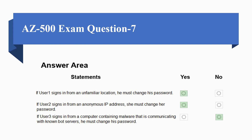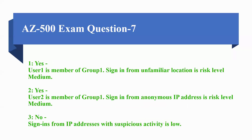If User 2 signs in from an anonymous IP address, must she change her password? Yes. If User 3 signs in from a computer containing malware that is communicating with a known bot server, must he change his password? No. The reasons are: User 1 is a member of Group 1 and sign-in from an unfamiliar location is risk level Medium. User 2 is a member of Group 1 and sign-in from an anonymous IP address is risk level Medium. Sign-in from IP addresses with suspicious activity is Low, so it does not meet the medium-and-above threshold.